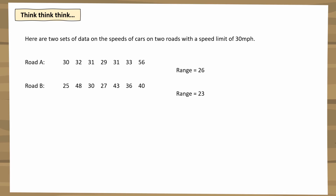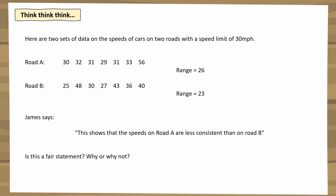The range is a measure of spread — it tells us how spread out the data is, or how consistent it is. James looks at those ranges and says that the speeds on Road A are less consistent than on Road B because the range is higher on Road A. Do you think that is a fair statement? Look at the actual speeds and have a think about it.